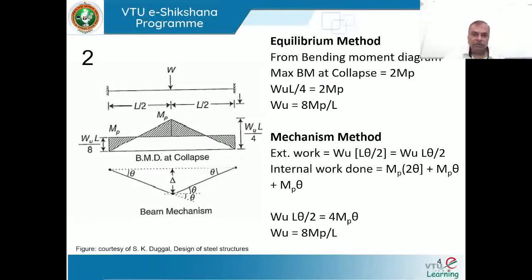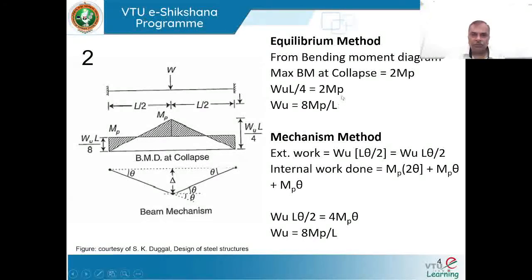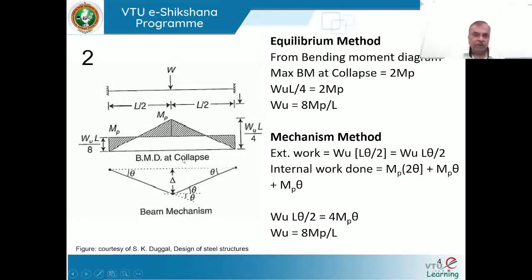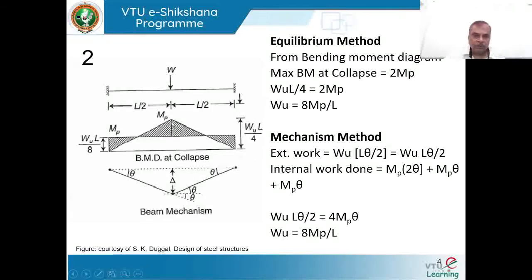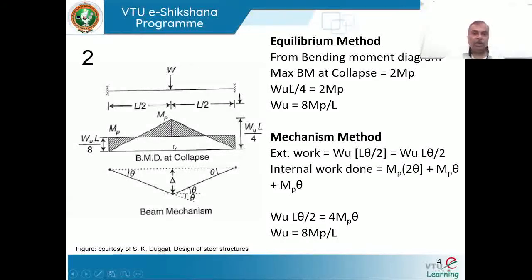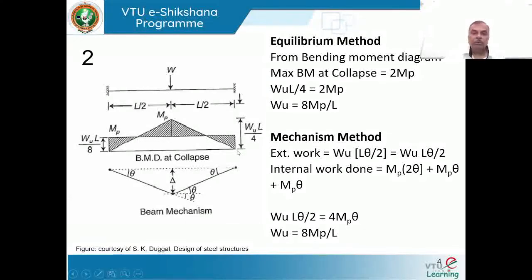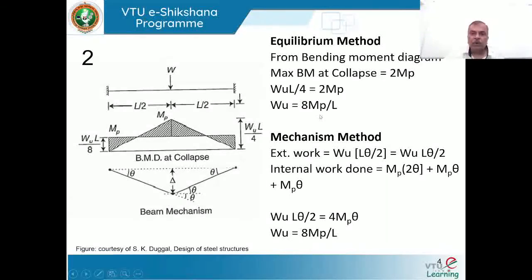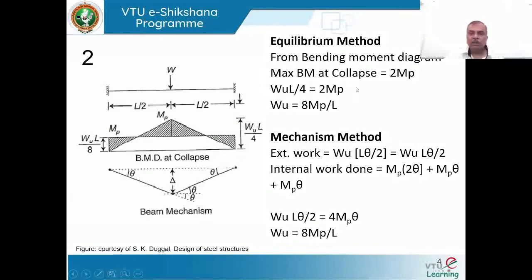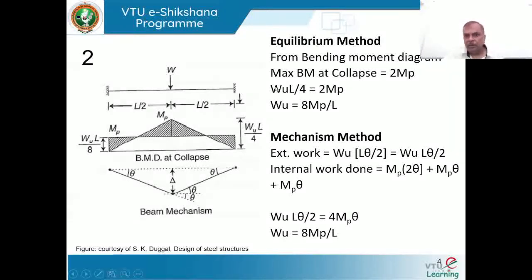From the bending moment diagram, the positive ordinate mp plus the negative ordinate mp gives 2mp. As a function of the load, this ordinate equals WL/4 from the free bending moment diagram. Therefore WL/4 = 2mp, giving W = 8mp/L, or equivalently mp = WL/8.